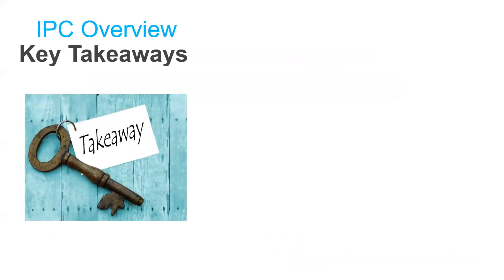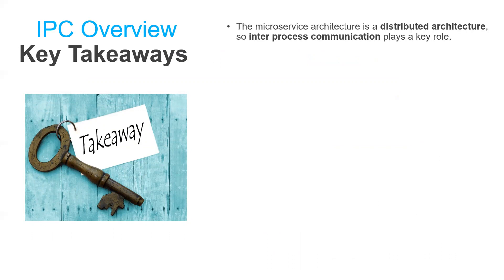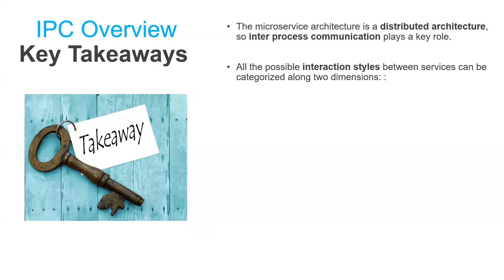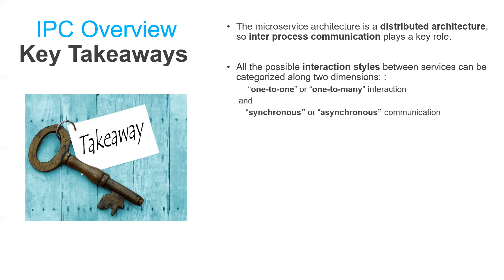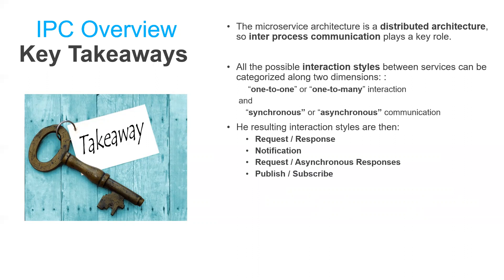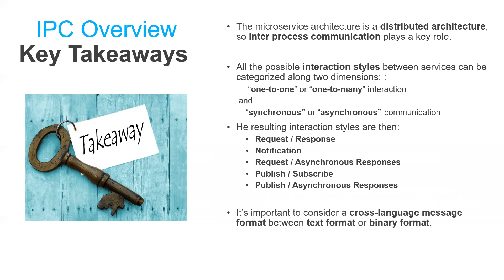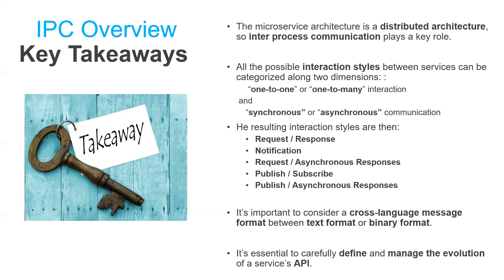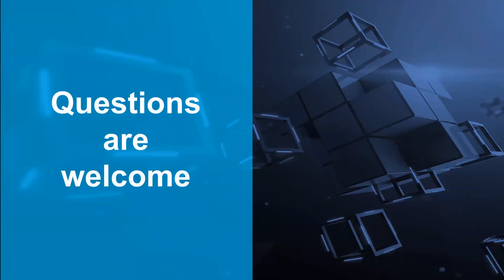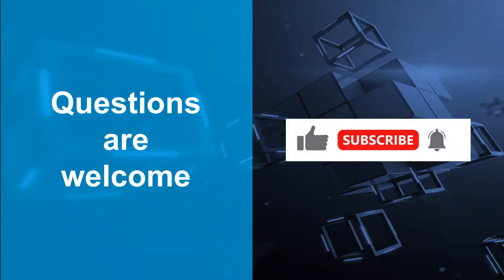To sum up, here are some key takeaways concerning inter-process communication in microservices: the microservice architecture is a distributed architecture, so IPC plays a key role. All possible interaction styles between services can be categorized along two dimensions — one-to-one and one-to-many on one side, and synchronous and asynchronous on the other — resulting in request/response, notifications, request/async-responses, publish/subscribe, and publish/async-responses. It is important to consider a cross-language message format, choosing between text or binary formats. And it is essential to carefully define and manage the evolution of services' APIs. Let me know in the comments if you have any questions, and don't forget to like the video and subscribe to the channel.